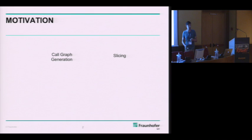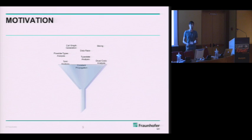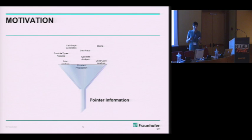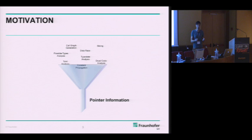There are a lot of algorithms in static analysis like call graph generation, program slicing, type state analysis, taint analysis, and various others. All of them basically have one bottleneck: all of these analyses require pointer information. We later computed that roughly 60% of the analysis time of a type state analysis was used to compute pointer information. But it's not only that pointer information reduces efficiency — the precision is also driven by a pointer analysis.